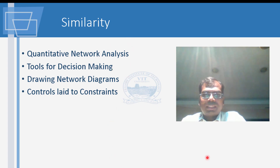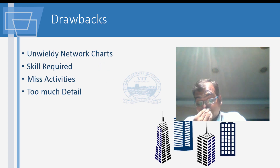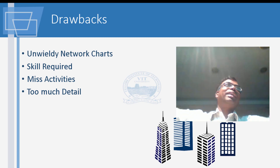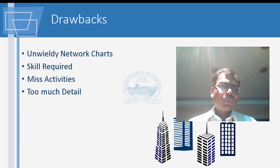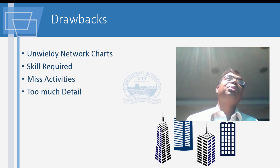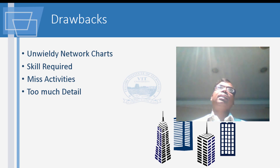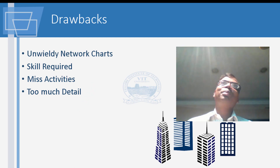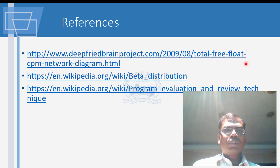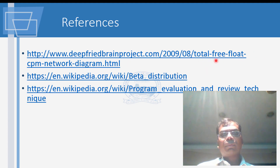One shared limitation is that network charts can sometimes become so large they can't be read on paper. Also, skill is required — you need to understand which activities are realistically possible on a given site. Sometimes activities are missed, and because the computer solves it automatically, you may also put in too many activities.